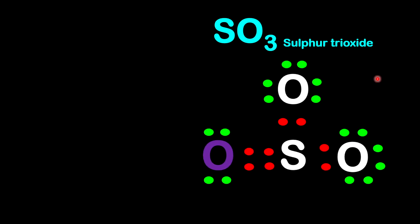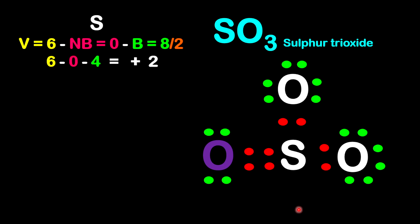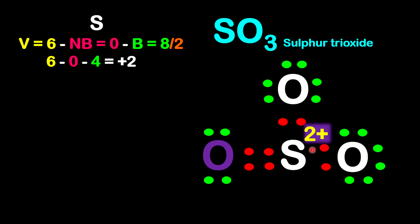This last example is sulfur trioxide. If you draw the Lewis dot structure like this, we're going to calculate the formal charges on each atom. Let's start with sulfur. Sulfur is from group 6. Notice here we have 0 non-bonding electrons. We have 8 bonding electrons, so 8 divided by 2. So we have 6 minus 0 minus 4 equals positive 2. The formal charge on sulfur in this structure is positive 2.